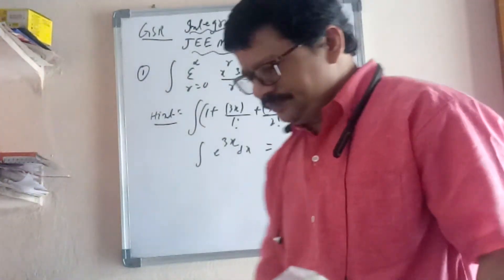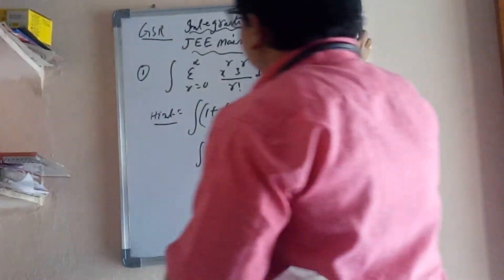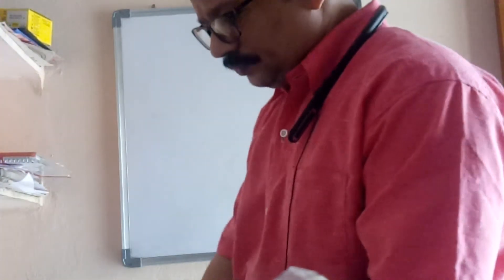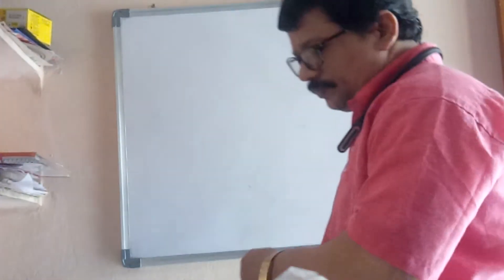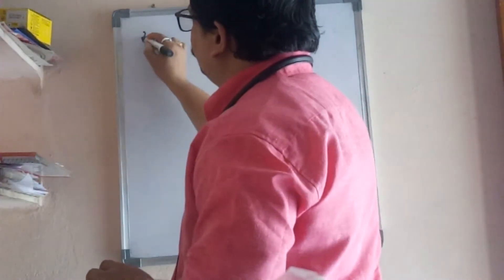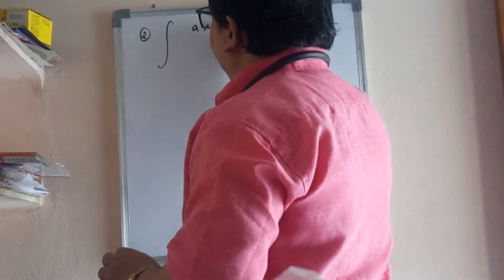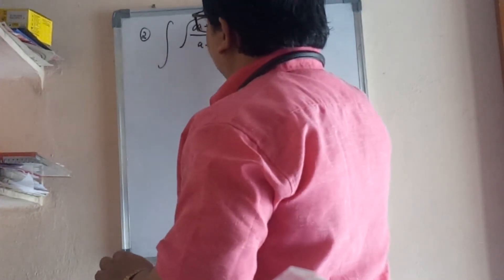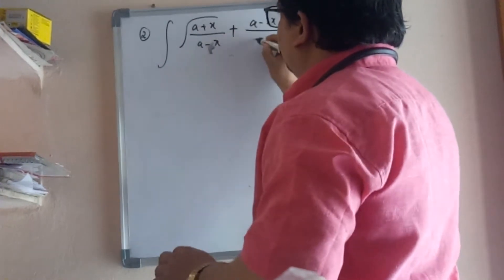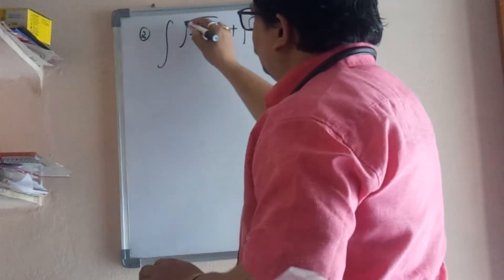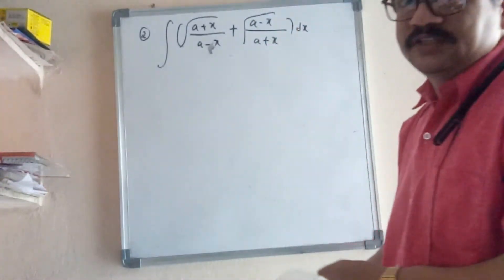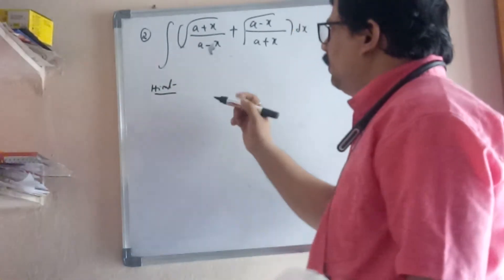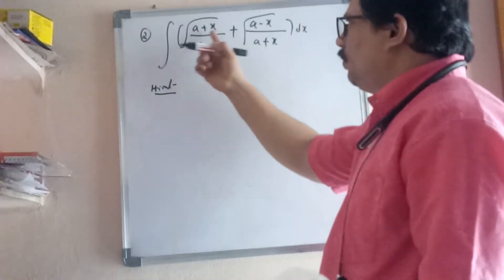Now second problem. Integral of √((a+x)/(a-x)) + √((a-x)/(a+x)) dx. How to do that? Simplify this, listen carefully.